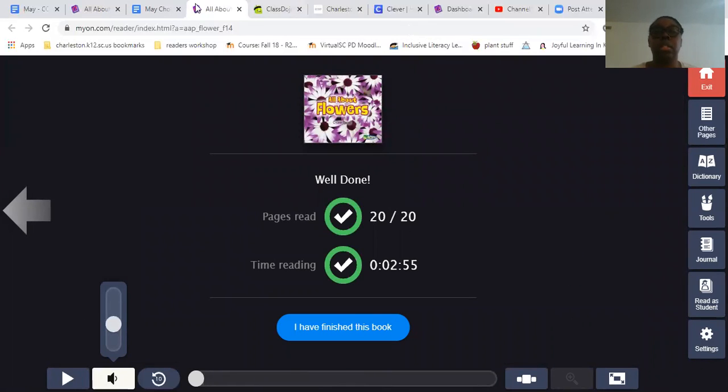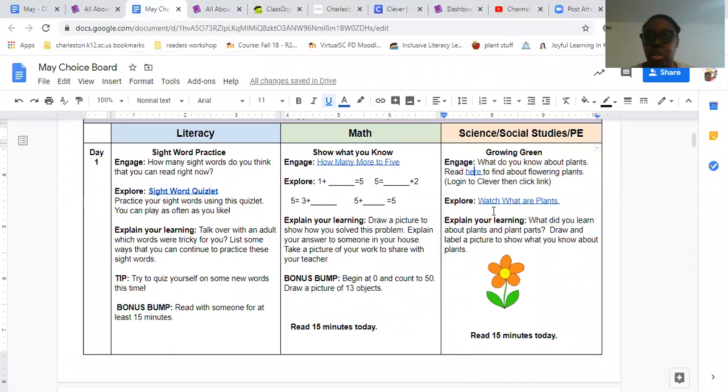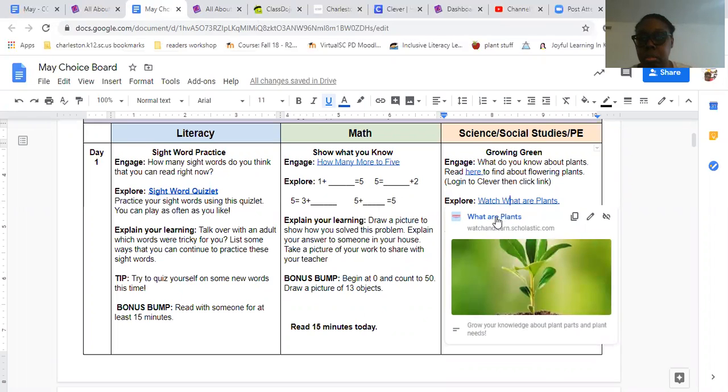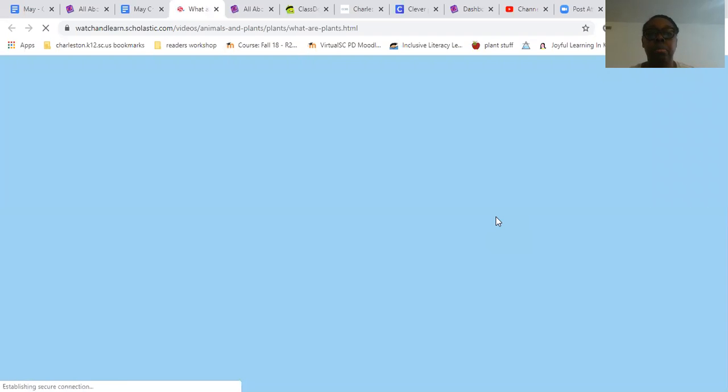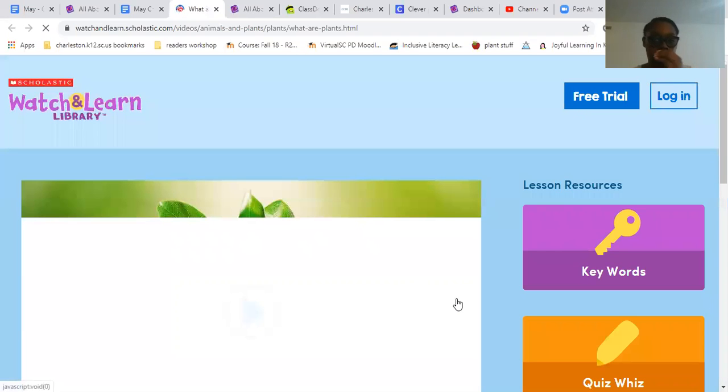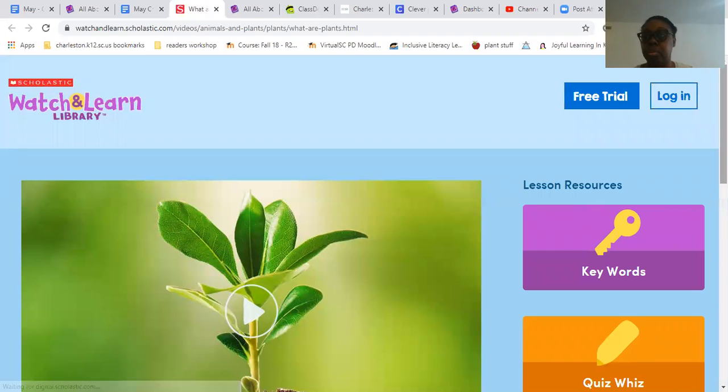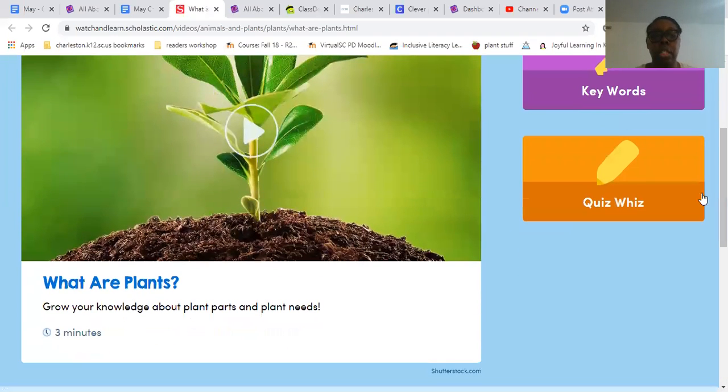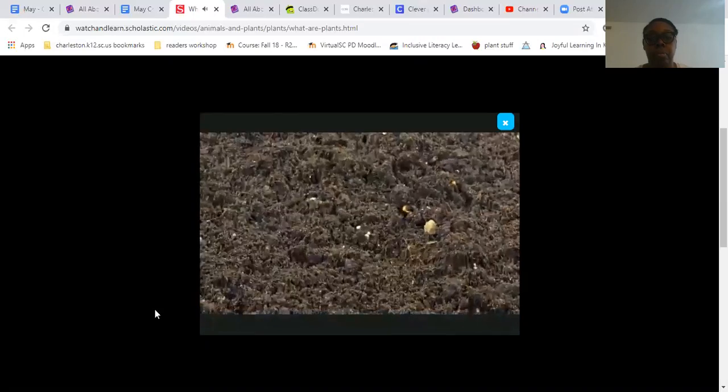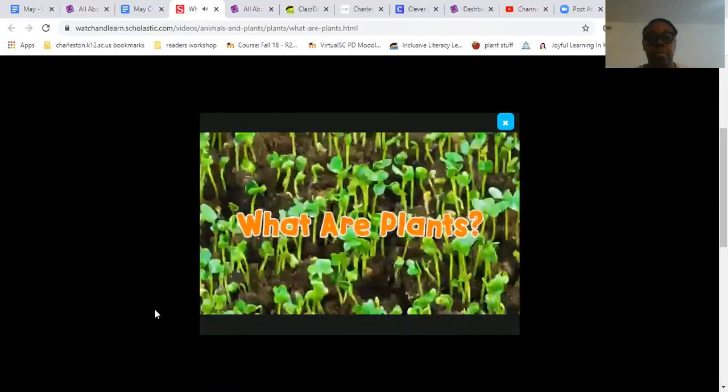So that's that story in MyON. And if we go back to our choice board, it says watch what are plants. And this is from Scholastic. And I've shown them this a couple of times. It's like a three minute video about what a plant is. So they have already seen this. Like I said, it's a review. You ready? Let's go.